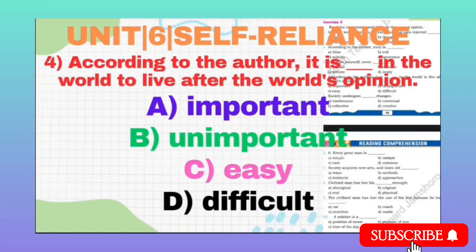MCQ number 4 is: According to the author, it is a ___ in the world to live after the world's opinion. It means according to the author, what is it to live by the world's opinion? Option A: Important. Option B: Unimportant. Option C: Easy. Option D: Difficult. The correct option is C, Easy.